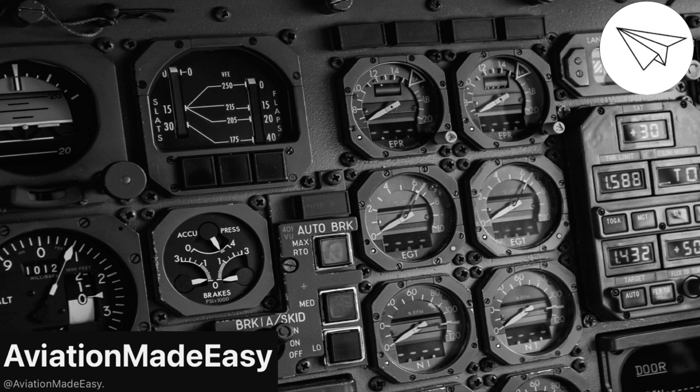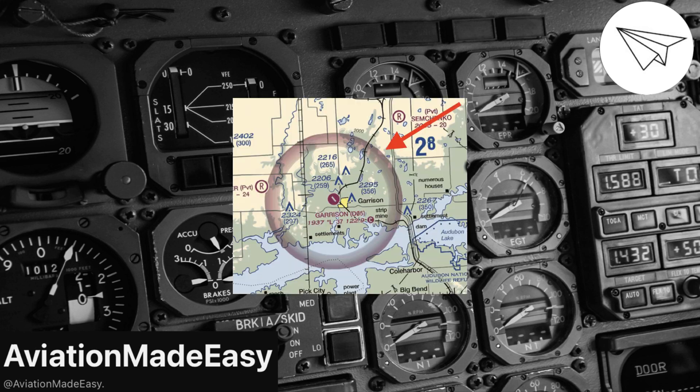The first trick is to look for the thick fuzzy magenta line or circles on the sectional chart. This indicates areas where class echo airspace begins at 700 feet AGL, often used to transition IFR traffic in and out of airports. However, if you are outside of those magenta boundaries or no specific altitude is marked on the sectional chart, class echo starts at 1,200 feet AGL, which is the default for areas not covered by other controlled airspace.